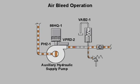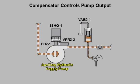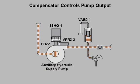When the auxiliary hydraulic supply pump is started, any air trapped in the pump discharge line will escape through air bleed valve VAB 2-1. Increasing oil pressure in the hydraulic supply manifold will quickly close the air bleed valve. The auxiliary hydraulic supply pump will deliver a maximum flow of oil to the hydraulic supply manifold until the pressure setting of the compensator VPR 3-2 has been achieved.